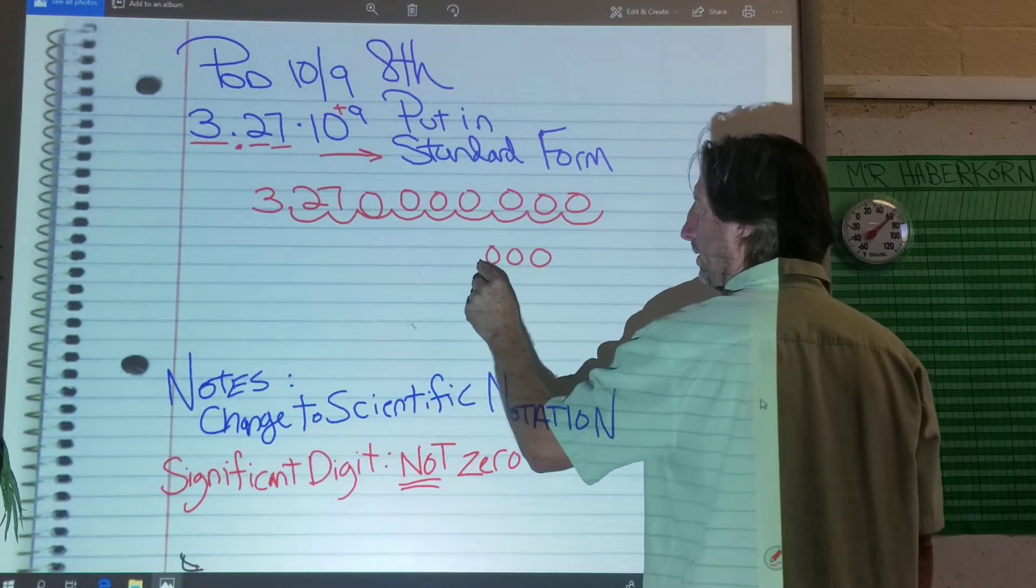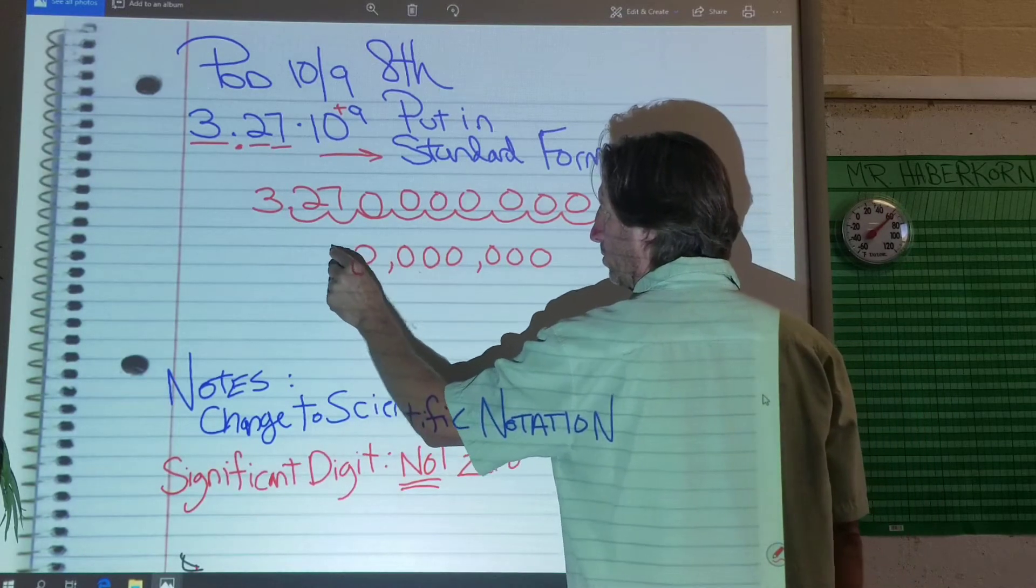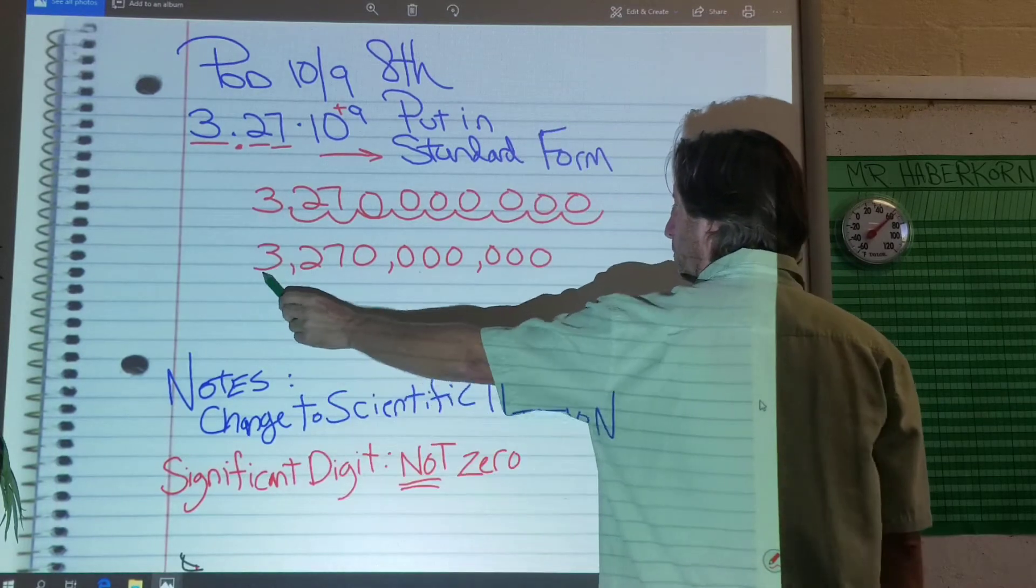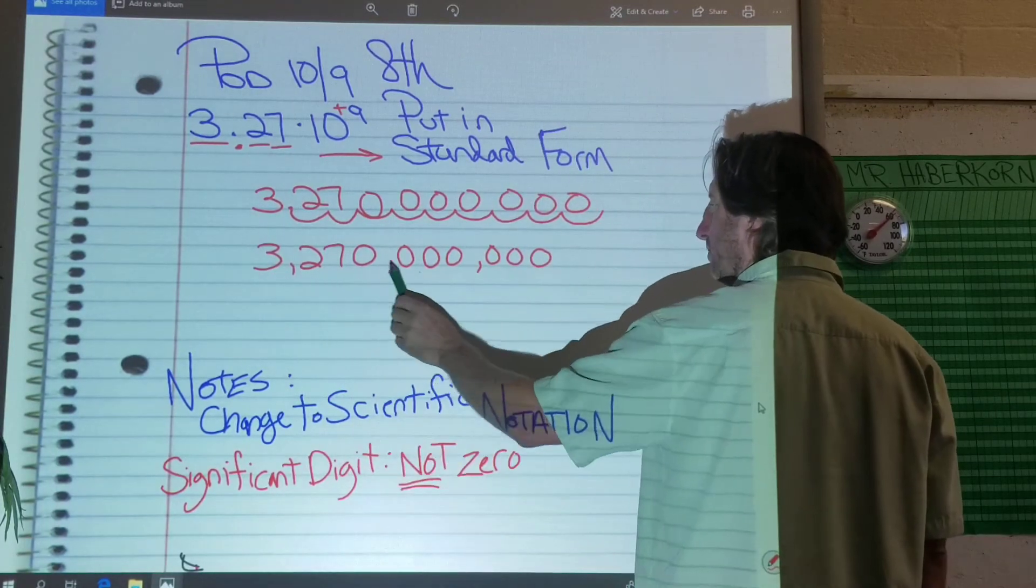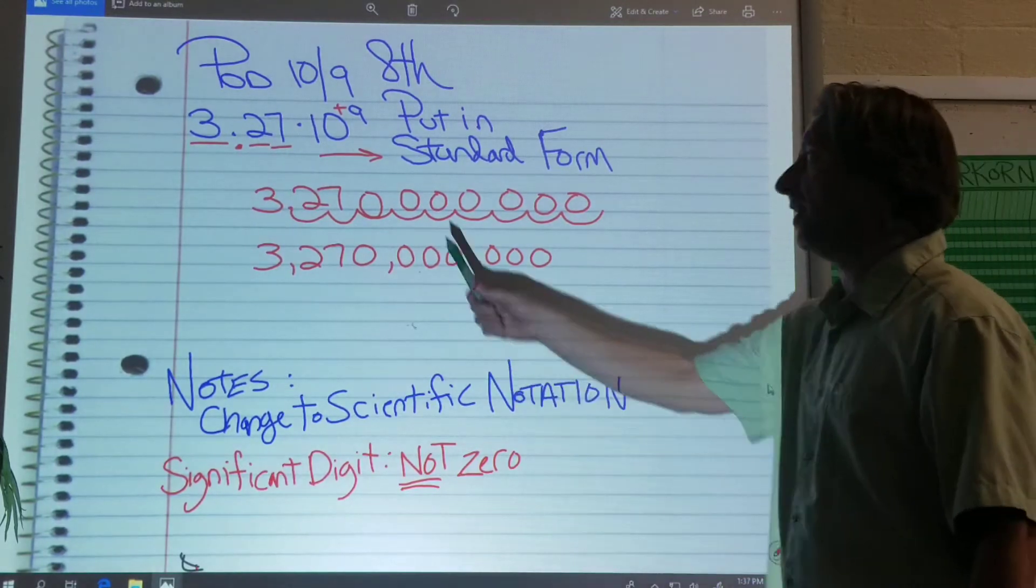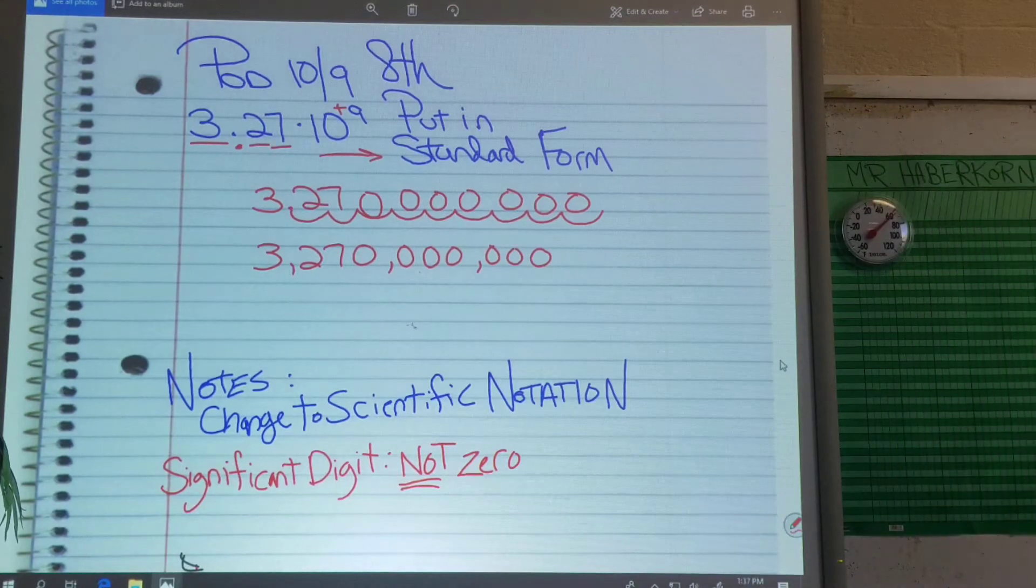1, 2, 3, comma, 1, 2, 3, comma, 0, 7, 2, comma, 3. So this is 3,270,000,000. Very big number, right? Notice how that exponent makes it large really quickly. So putting that number in standard form. There you go.